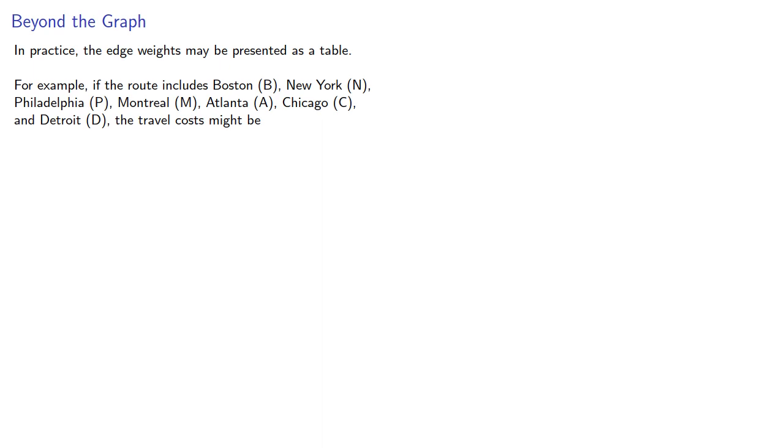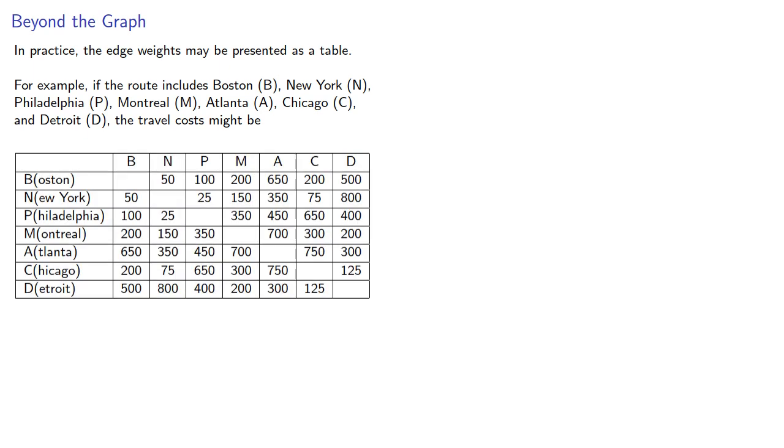In practice, the edge weights may be presented as a table. For example, if our route includes Boston, New York, Philadelphia, Montreal, Atlanta, Chicago and Detroit, the travel costs, not the actual distance but how much it costs to get from one place to another, might be summarized in a table looking like this.